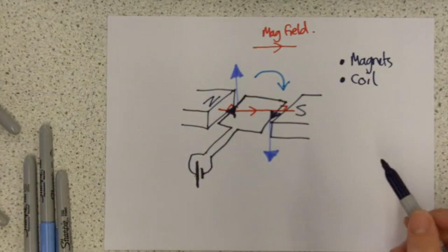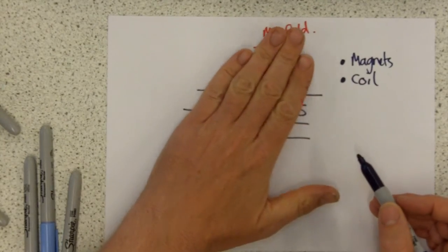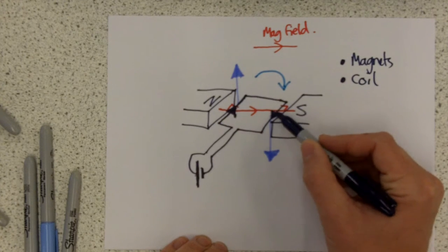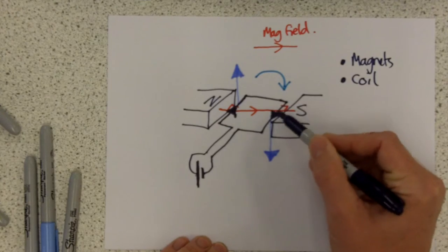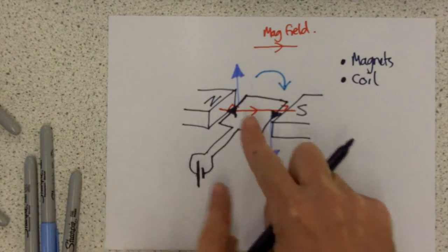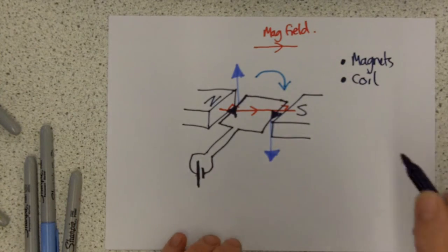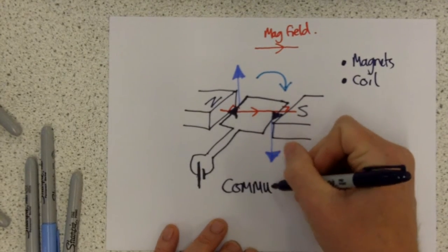The only way to make it useful is for somehow, as the coil flips over, we can reverse the current in the coil such that we always get the coil that's this side having a current plane in this direction, which means it will flip again in the same direction. So it keeps on flipping, keeps on flipping, and that's the way it rotates. Now the way that we do this is with something called a commutator.